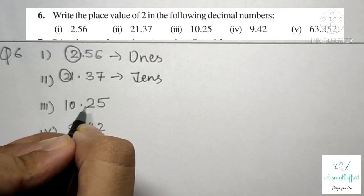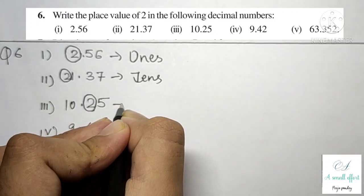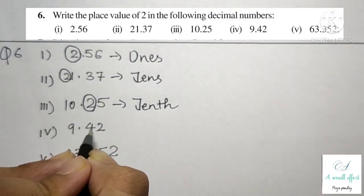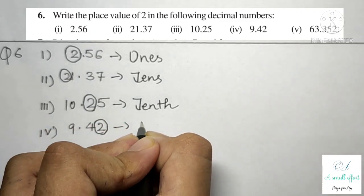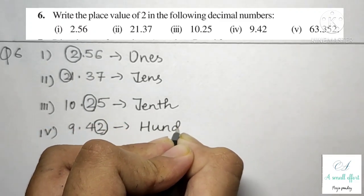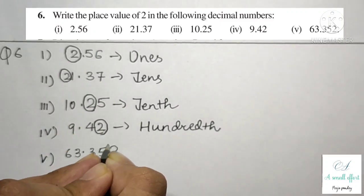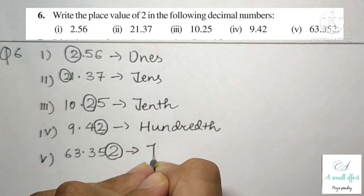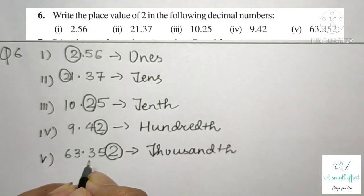Third part: 10.25 — 2 is on the right side of the decimal point in the first position, so its place value is tenths (1/10). Fourth part: 9.42 — 2 is on the right side of the decimal point in the second position, so its place value is hundredths (1/100). Fifth part: 63.352 — 2 is on the right side in the third position, so its place value is thousandths (1/1000).